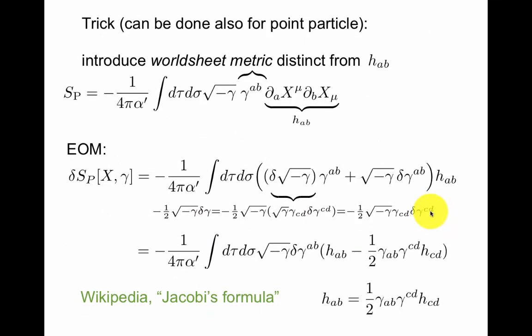So you see that the equation of motion for gamma, this is a constraint on gamma. You introduce a redundancy of three functions, now you impose three conditions.